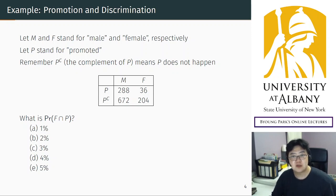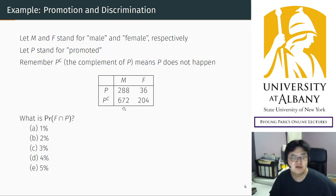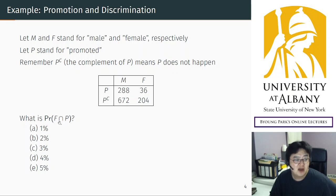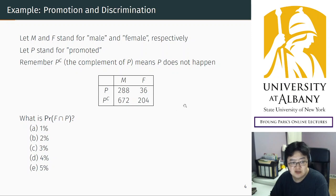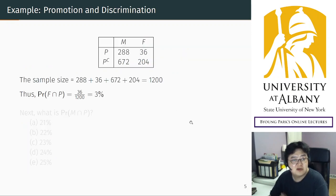From this table, can you calculate the probability of F intersection P? We learned this notation in the previous chapter. The intersection connects two events by AND — so we want the probability of being female AND promoted at the same time. Pause the video and calculate.